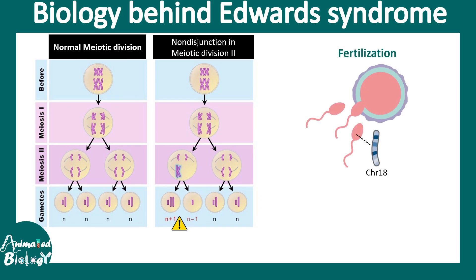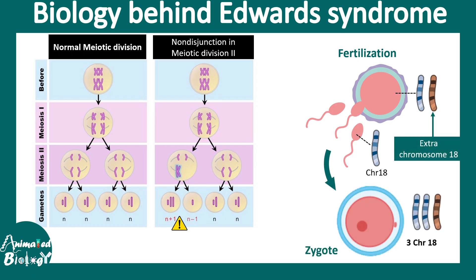When fertilization occurs, the sperm has one copy of chromosome 18, and ideally the ovum would also have one copy, so after fertilization the zygote would have two copies of chromosome 18. But due to non-disjunction, the mother's ovum already has two copies of chromosome 18, and the other copy comes from the father. The end result is three copies of chromosome 18 — and that's the sole biological reason behind Edward syndrome.